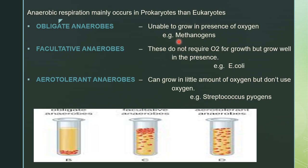Depending on anaerobic respiration, microorganisms — especially bacteria — are classified into three types. Anaerobic respiration is found mainly in prokaryotes rather than eukaryotes. The three types of anaerobes are: obligate anaerobes, facultative anaerobes, and aerotolerant anaerobes. Obligate anaerobes are microorganisms unable to grow in the presence of oxygen; they grow at the bottom where there is no oxygen supply, and in the presence of oxygen they will literally die.